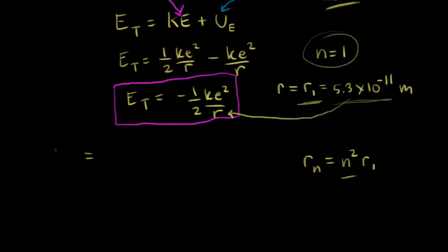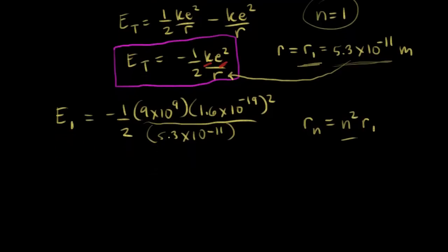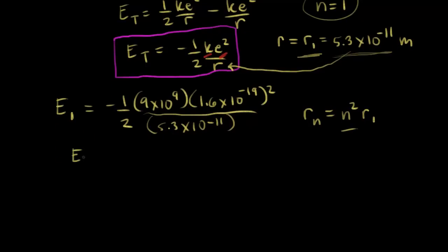Plugging in the values, the total energy for n equal to 1 is negative one-half times K — which is 9 times 10 to the 9th — times e squared, where e is 1.6 times 10 to the negative 19 coulombs, divided by the radius 5.3 times 10 to the negative 11 meters. Doing that calculation, the energy associated with the ground state electron in a hydrogen atom is negative 2.17 times 10 to the negative 18 joules.